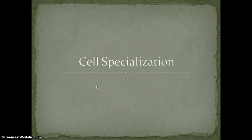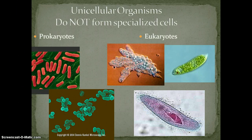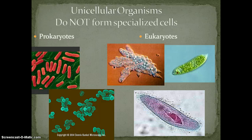Think of cells in your body — each of them are special because each of them has a specific job to perform. Unicellular organisms do not have specialized cells. Why? Because they're only one cell big, so their cells can't be special because there's only one of them.